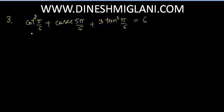cot(pi/6) = cot 30° = √3, so (√3)² = 3. Plus cosecant of (pi − pi/6) plus 3 × (tan 30°)² = 3 × (1/√3)². This gives 3 plus cosecant(pi/6) plus 3 × 1/3 = 3 + 1 = 4. And cosecant(pi/6) = 2, so 4 + 2 = 6. Hence LHS = RHS = 6.